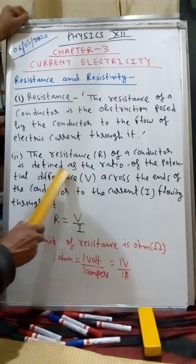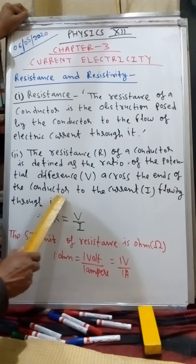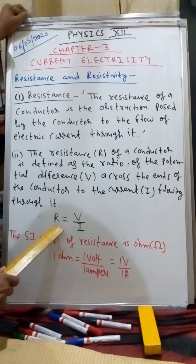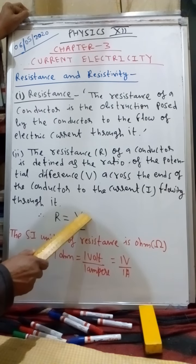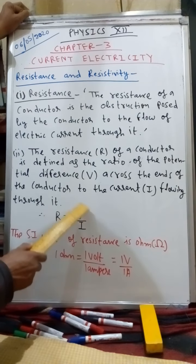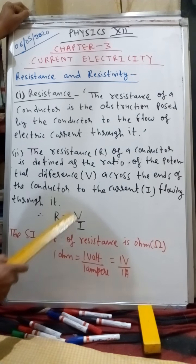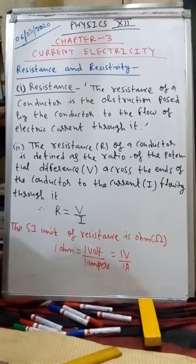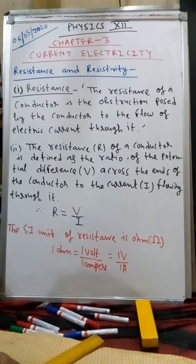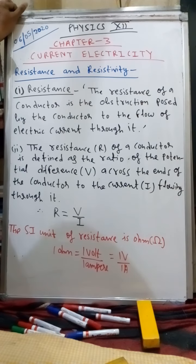The resistance R of a conductor is defined as the ratio of the potential difference V across the ends of the conductor to the current I flowing through it — that is, R = V/I. From Ohm's law, V = IR, so R equals V divided by I, where V is the potential difference and I is the current. The ratio of potential difference to current is known as resistance.